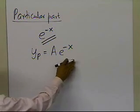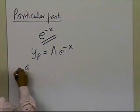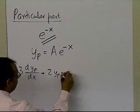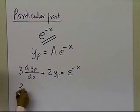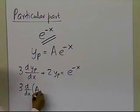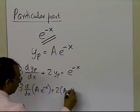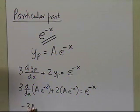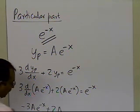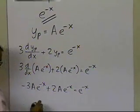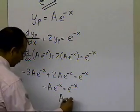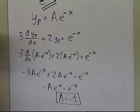Since we have the particular part, we now substitute it into the differential equation: 3 times dyp/dx plus 2yp equals e to the power minus x. Substituting yp = a*e^(-x), the derivative gives minus a*e^(-x), so we get minus a*e^(-x) plus 2a*e^(-x) equal to e^(-x). This simplifies to minus a*e^(-x) equal to e^(-x), so a must equal minus 1.